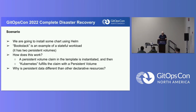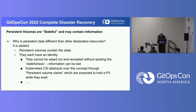How does this work? A persistent volume claim in the template is instantiated and then Kubernetes fulfills the claim with a persistent volume. So why is persistent data different than other declarative resources? They're stateful. Persistent volumes are stateful. They may contain information. They have an identity. They cannot be wiped and recreated without spoiling the statefulness. So you can guess what happens when the persistent volume goes away, when the claim goes away.